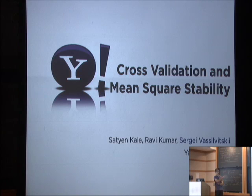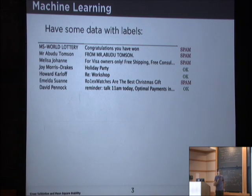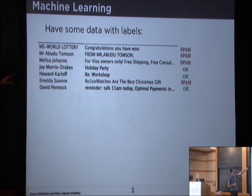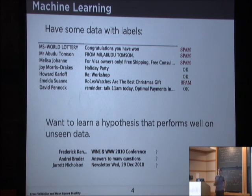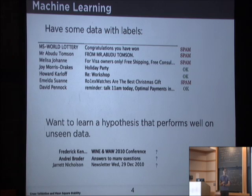Let's go through the title and motivate it slowly to explain what all these things are. In machine learning, we usually deal with data. Here's a non-uniform sample from my mailbox. The data usually comes with labels. I didn't win the MS World Lottery, unfortunately, nor the Nigerian spam. But the holiday party was an actual email. What we do in machine learning is we try to learn some hypothesis that performs well on unseen data. If I get an email that says 'answers to many questions,' it feels like spam — but that was actually legitimate. Whereas the newsletter, which feels legitimate, is actually not.